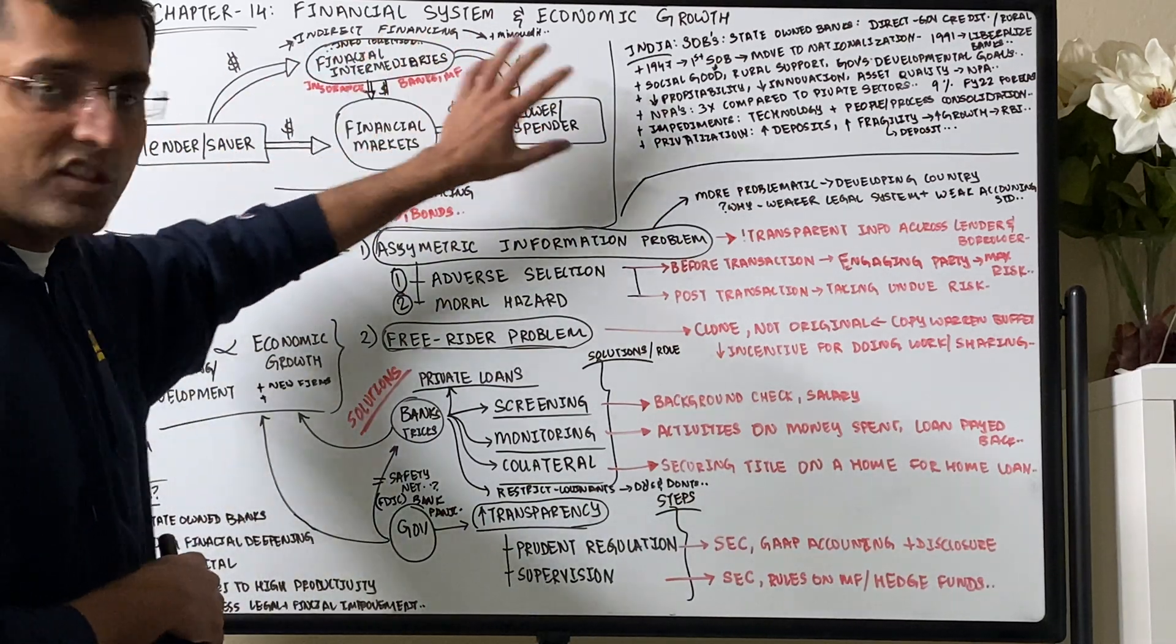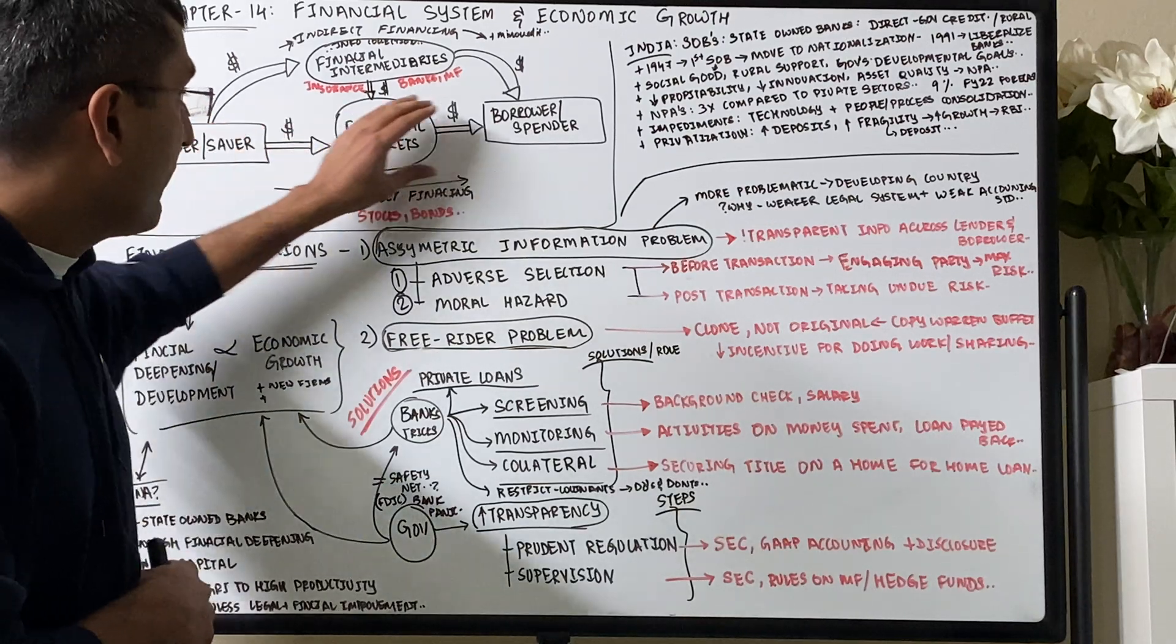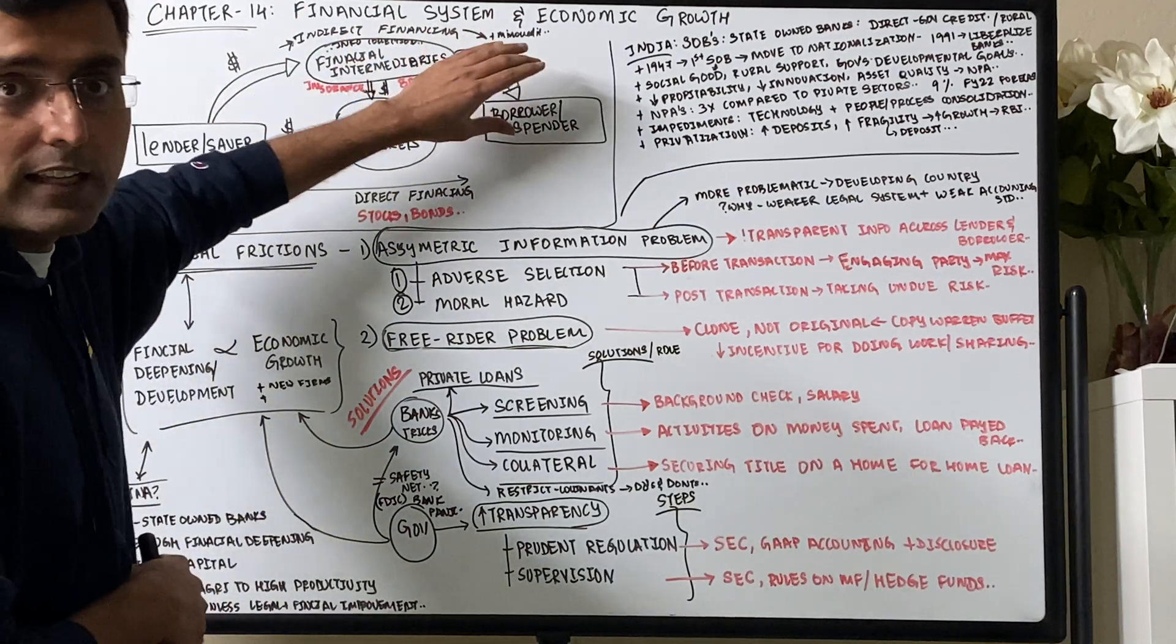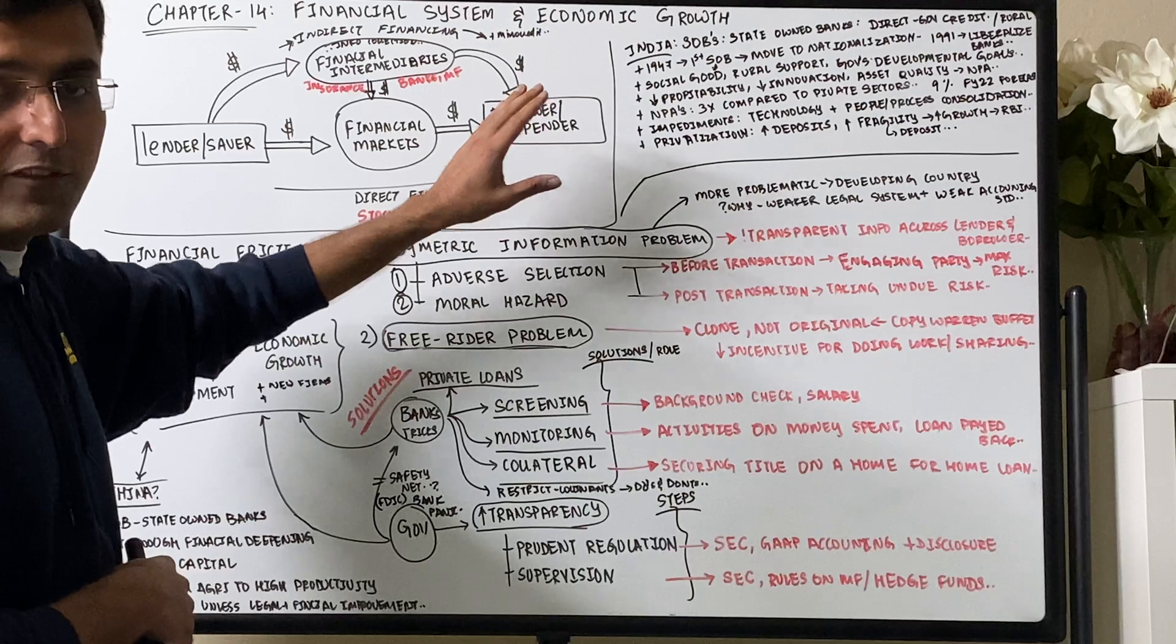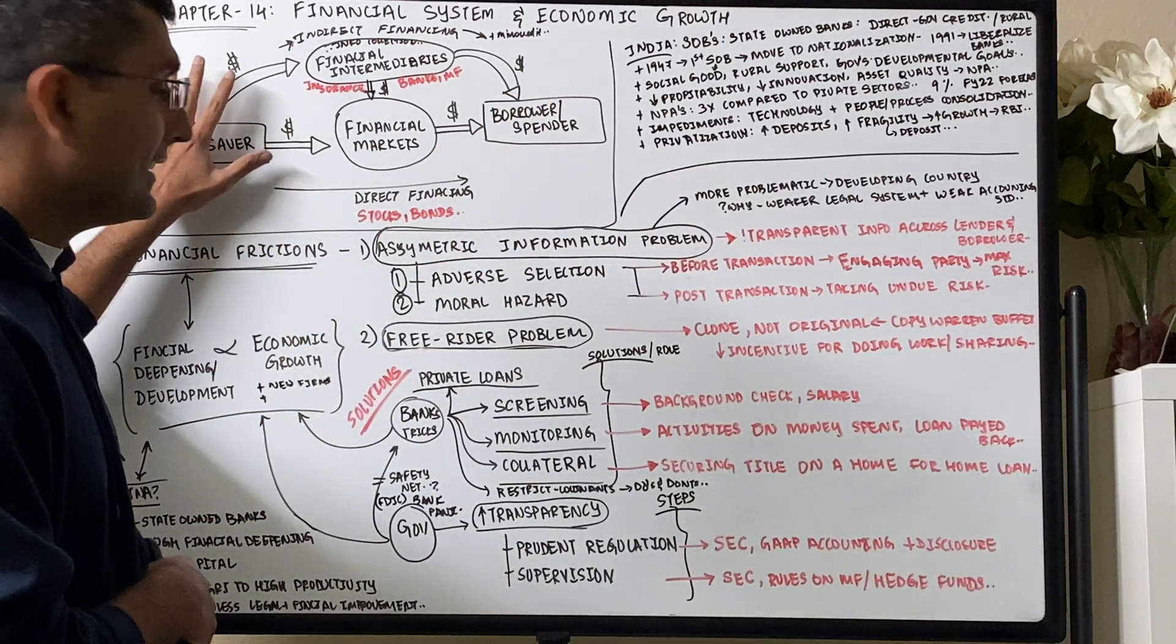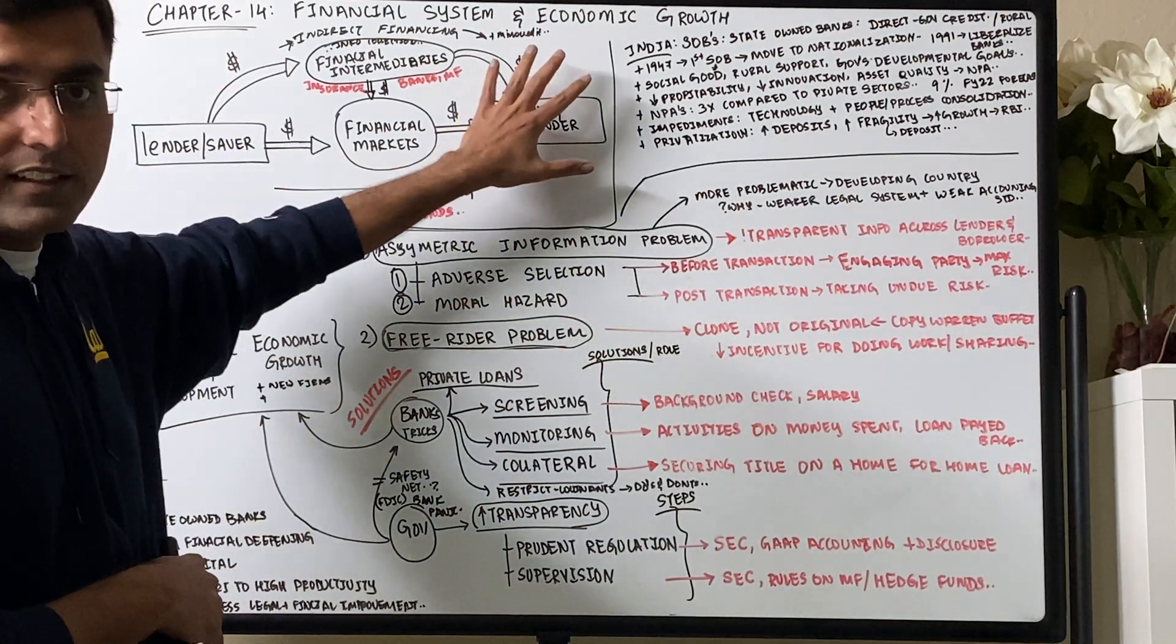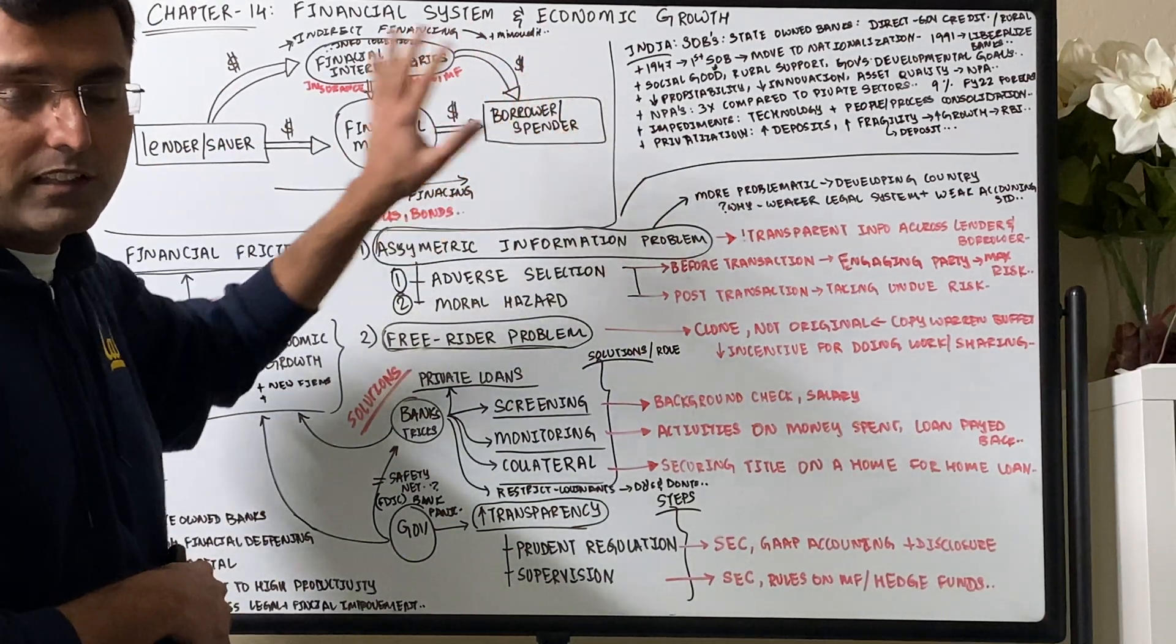Money reaches the idea person or entity by direct financing or indirect financing. So there are two types of financing. Financing is basically how the money flows from the person who has it, the saver or lender, to the person who wants it, the borrower, spender, or entrepreneur.